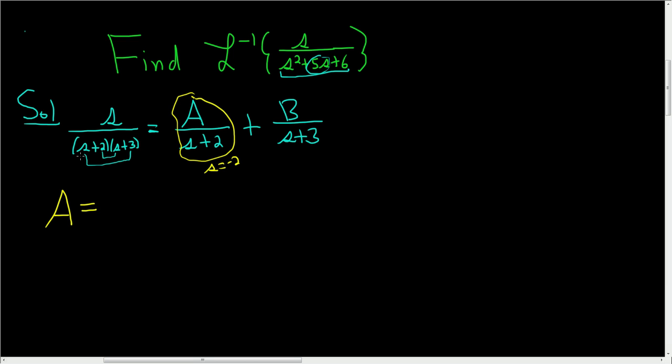So then we come over here and we cover up the s plus 2. So we're going to plug in negative 2 into everything except s plus 2. So it's negative 2, and then we ignore the s plus 2, so now we're looking here, and then negative 2 plus 3. So this is negative 2 over 1, so it's negative 2. That's it.